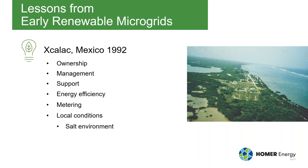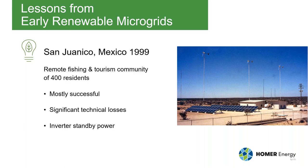Another lesson was the importance of energy efficiency. We put in this system and the villagers all went out and bought secondhand refrigerators — really inefficient compared to new modern ones — which overwhelmed the system. It's much more cost-effective to spend money on energy-efficient appliances than to power inefficient ones. There was also no metering, so people didn't care about efficiency. And local conditions matter — this was a salty ocean environment with corrosion problems.